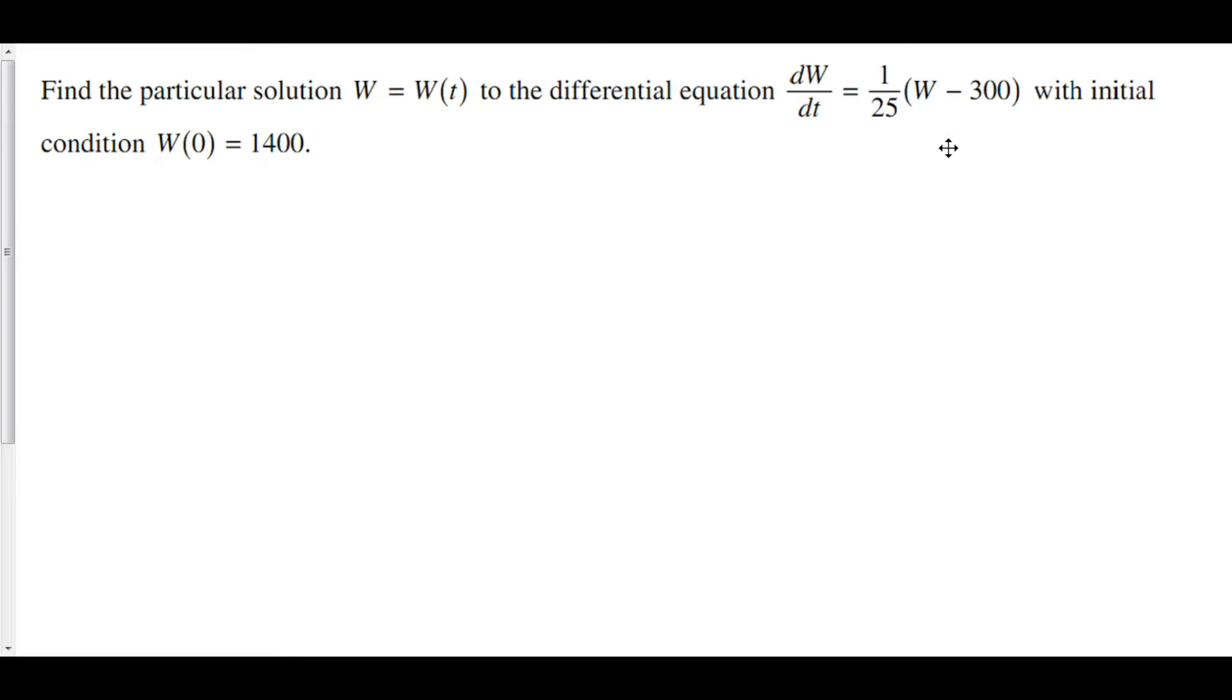The first step is to separate your variables. The only way to separate variables here would be to divide both sides by w minus 300. Keep in mind that if we were to distribute the 1/25 as many often want to do, we would have 1/25w minus 12 since negative 300 over 25 is negative 12.